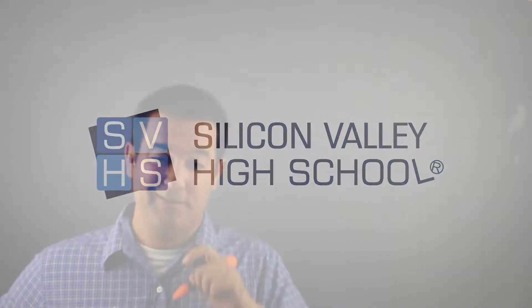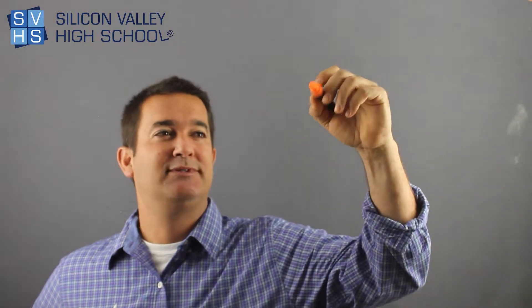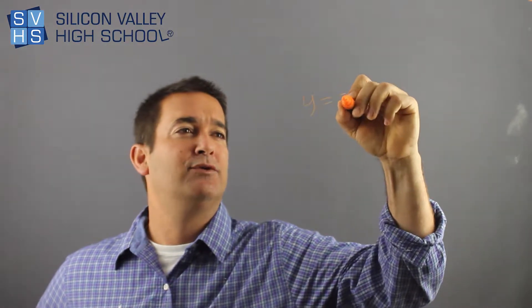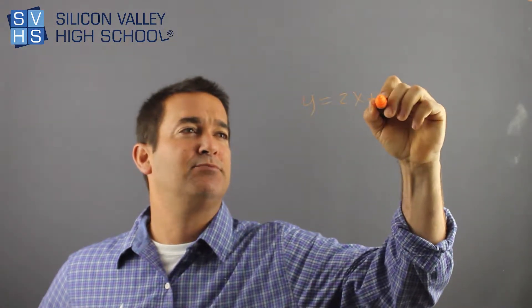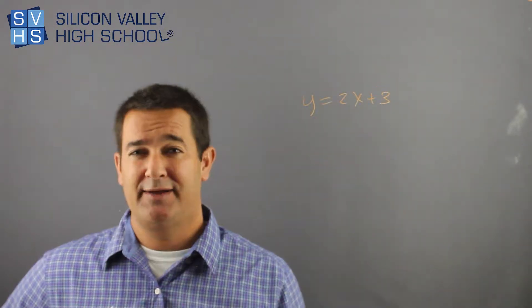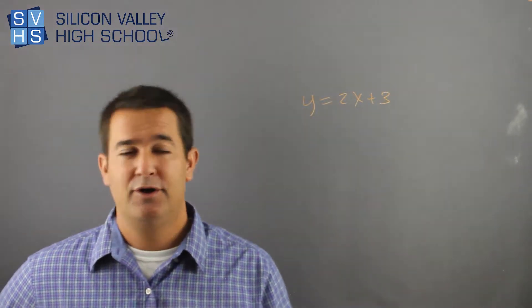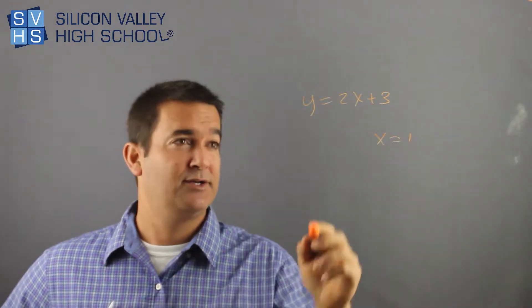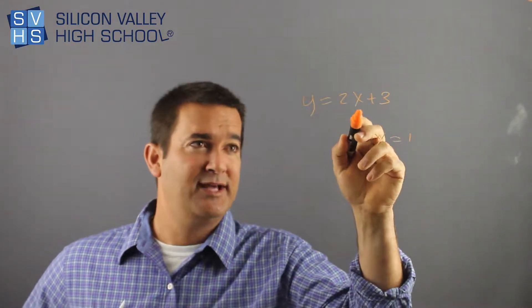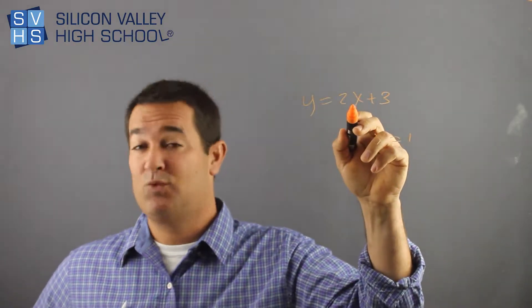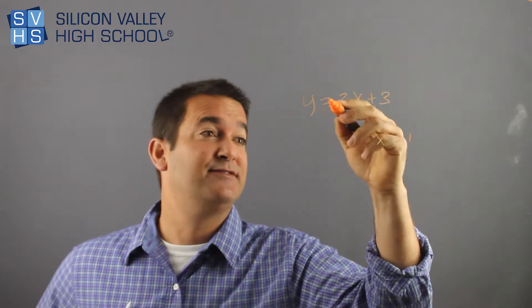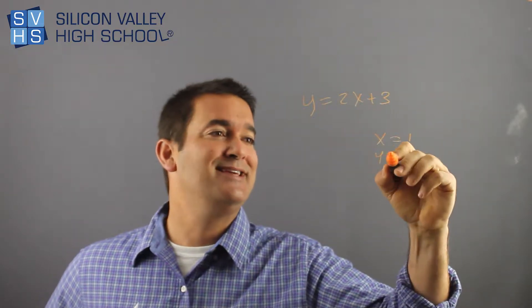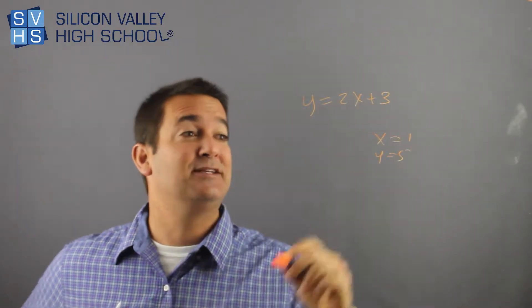Function notation used to annoy me when I was a kid, because people would say y equals 2x plus 3, and then if x is 1, solve for y. So I'd put 1 into x — 2 times 1 was 2, plus 3 is 5 — so y is 5. That seemed easy enough.